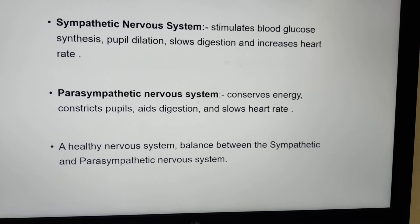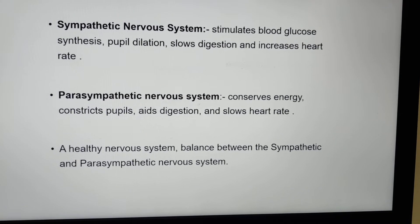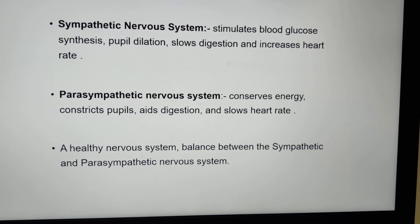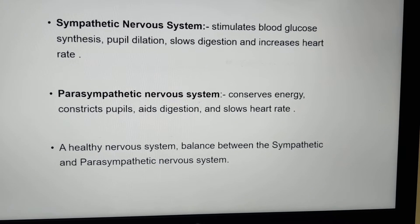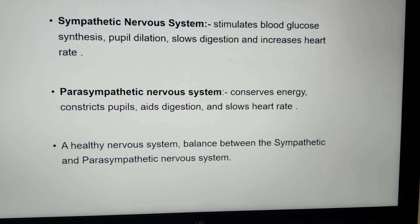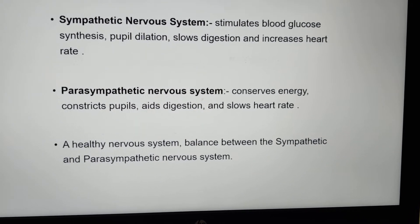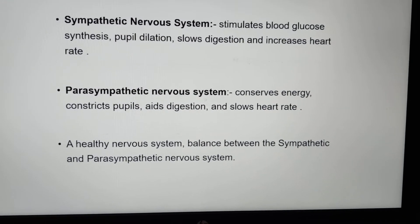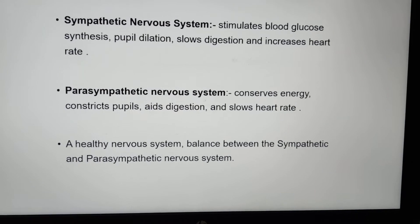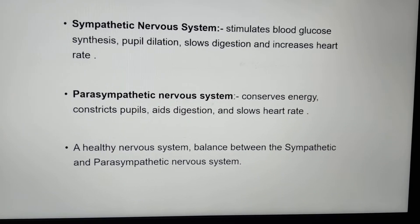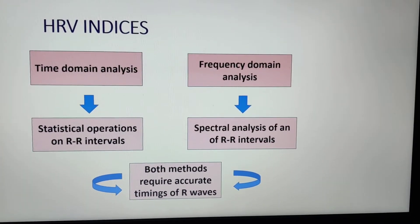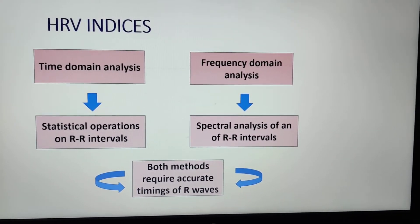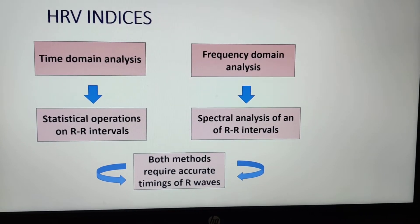The parasympathetic nervous system conserves energy, constricts the pupils, aids digestion, and slows the heart rate. A healthy nervous system maintains balance between the sympathetic and parasympathetic systems. These are the HRV indices, meaning the HRV parameters.